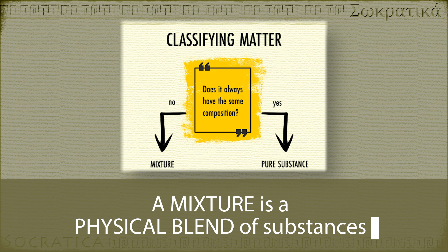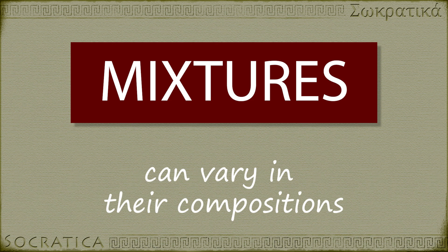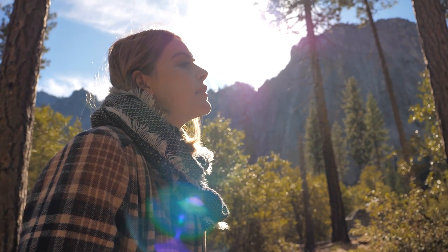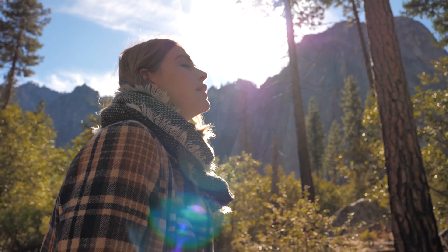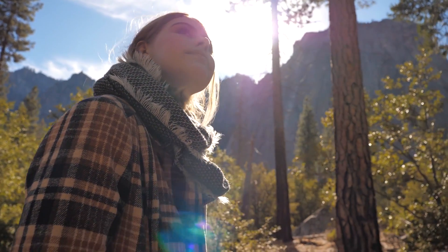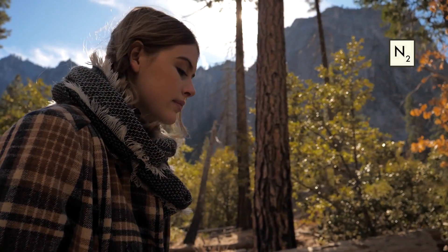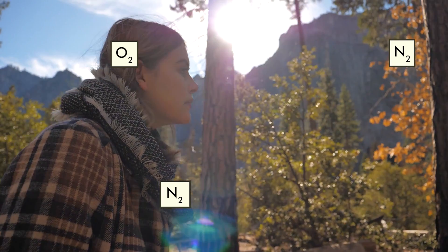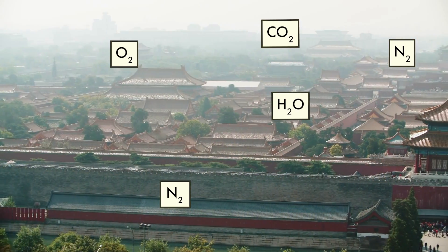But unlike a compound, where the substances are in fixed ratios—always identical—a mixture can vary in its composition. For instance, we call the blend of gases that we breathe air. Air doesn't have an identical composition everywhere at all times. In general, it has a lot of nitrogen, some oxygen, some carbon dioxide, and a few other gases mixed in.